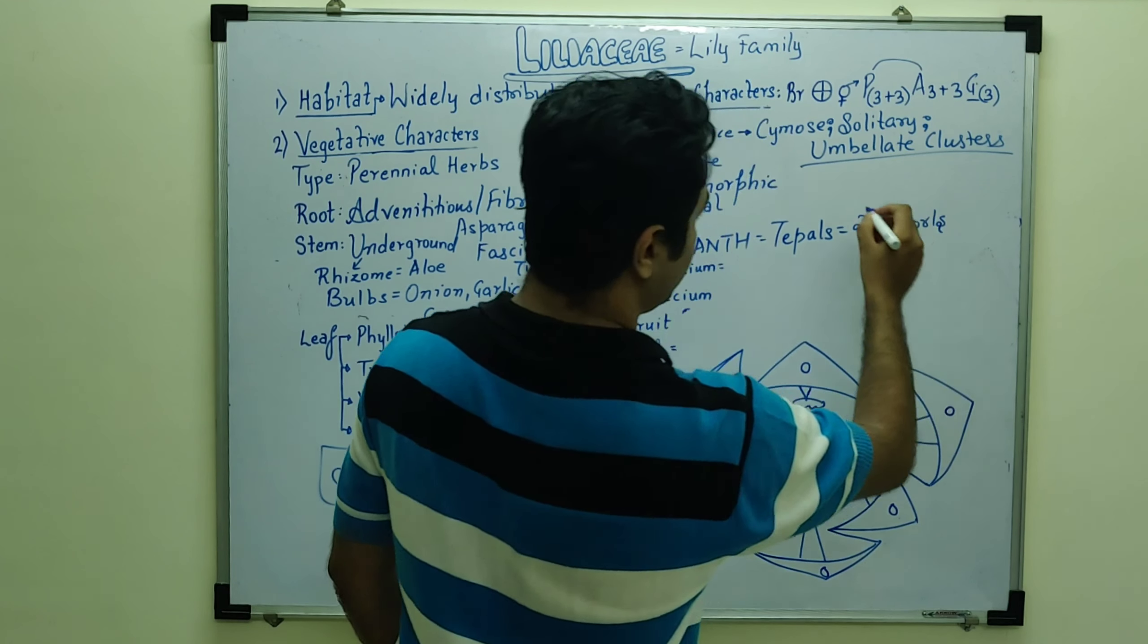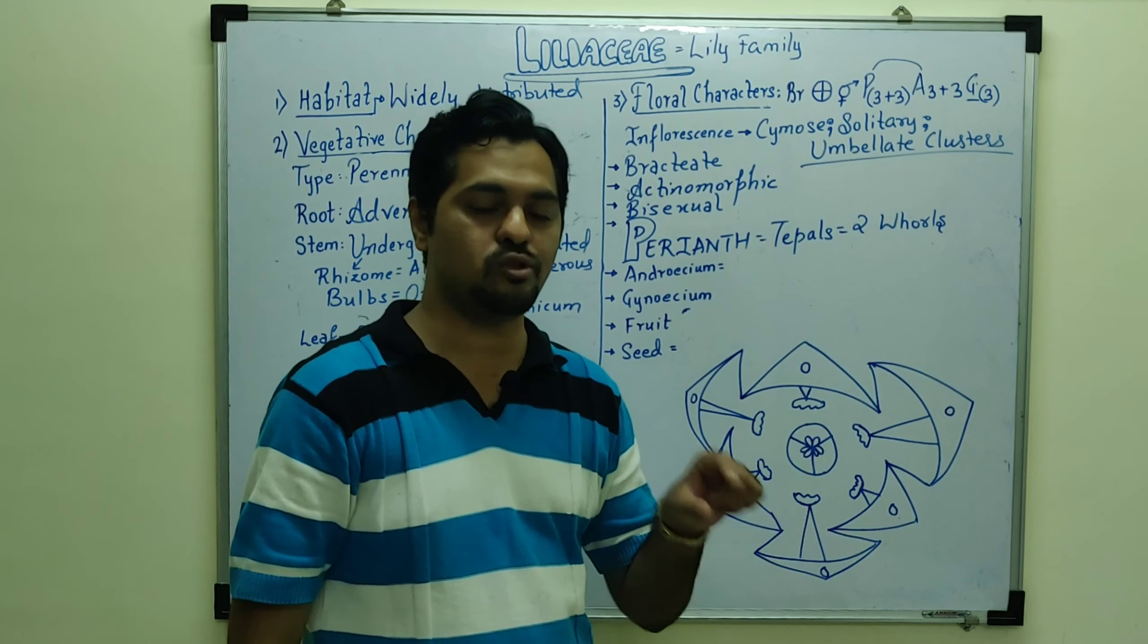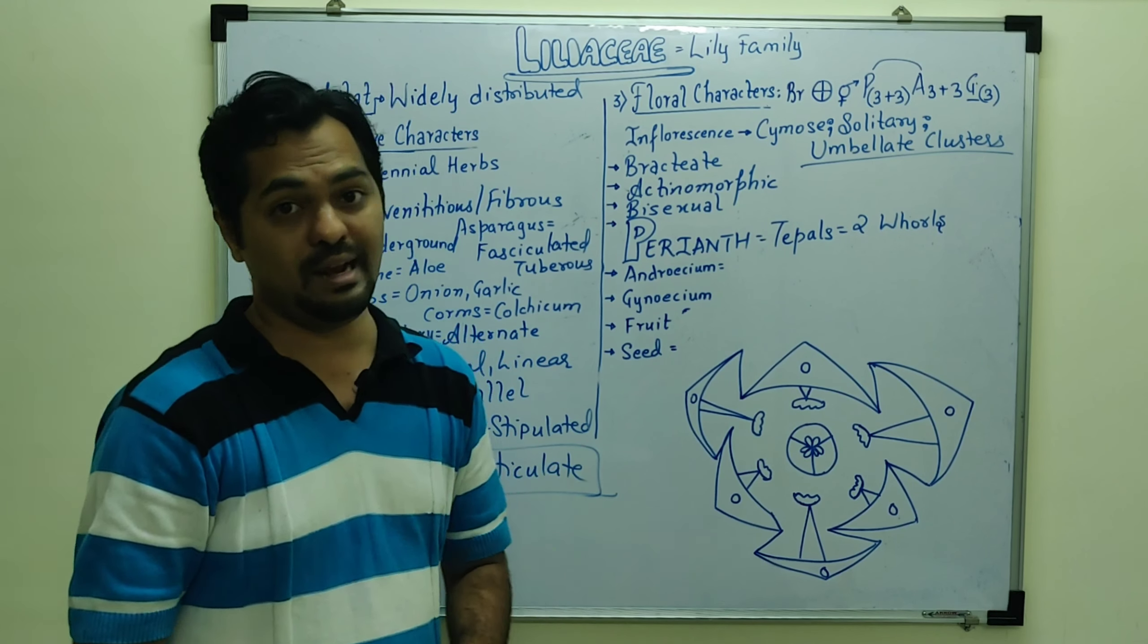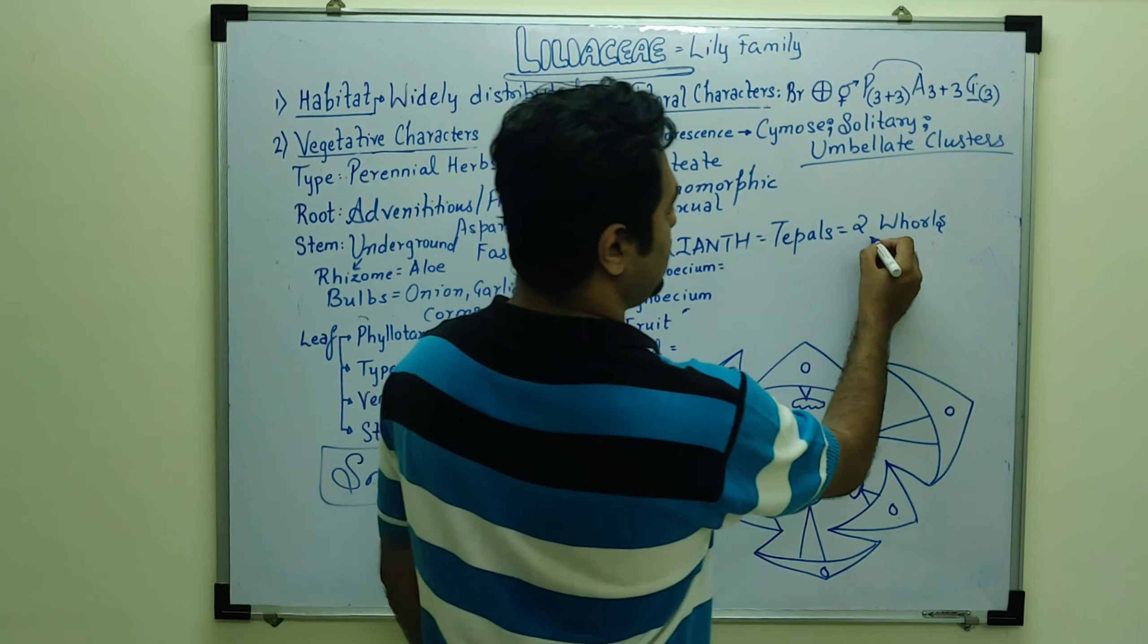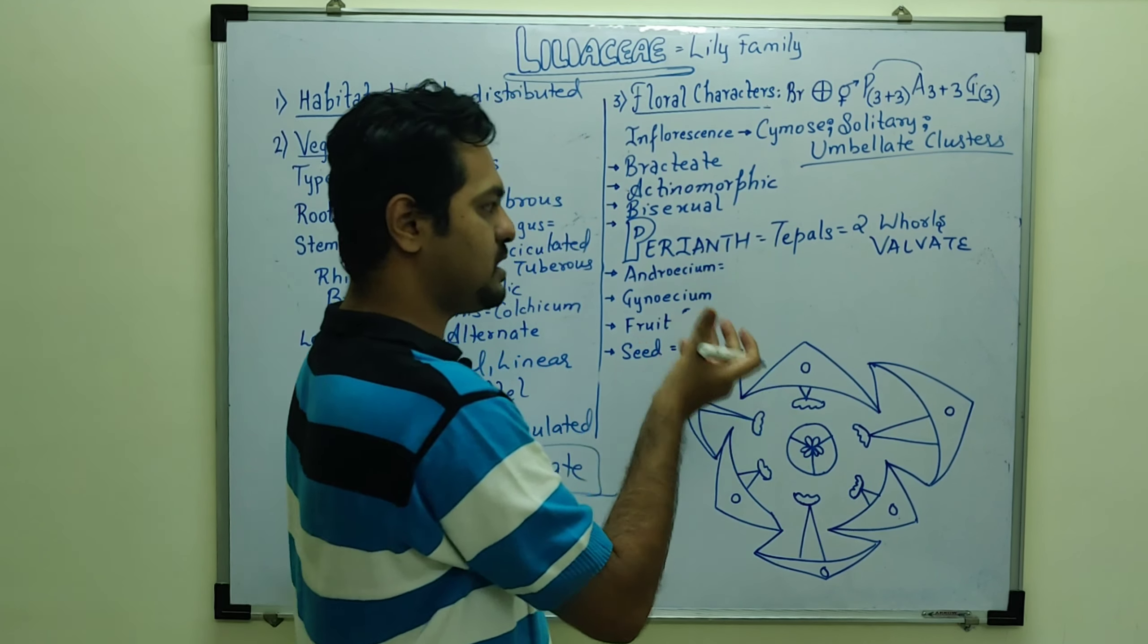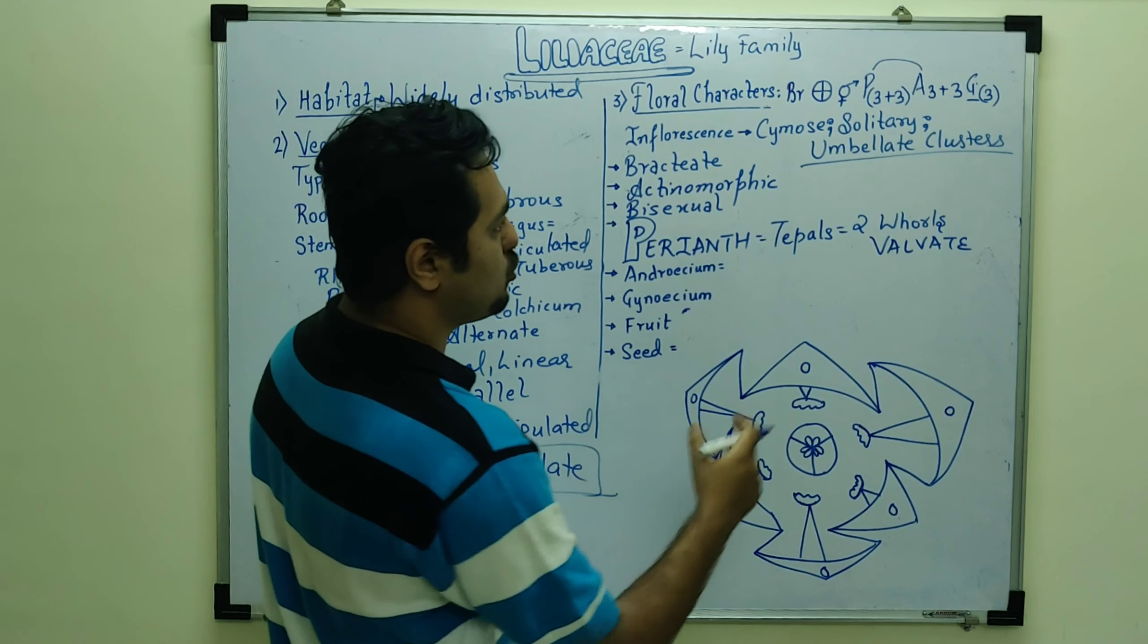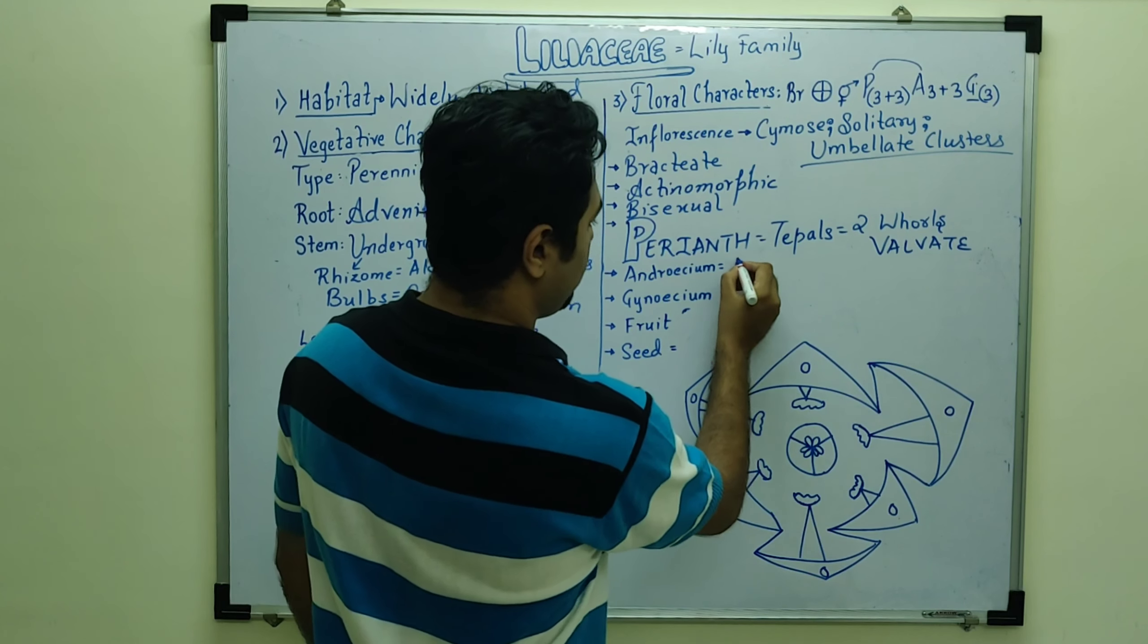And perianth which is individual members, so in trimerous there are three outer petals and three inner petals. So perianth is found showing trimerous in two whorls, two whorls is an arrangement. And fused and free, here is a fusion, so this is a gamophyllous.